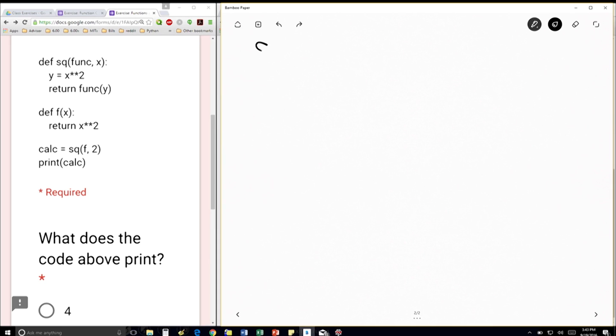So inside sq, we're going to have func and x. And func is going to get mapped to f, and x is going to get mapped to 2, right? Because we're taking the variables in order and mapping them to those. So func is f, and x is 2.